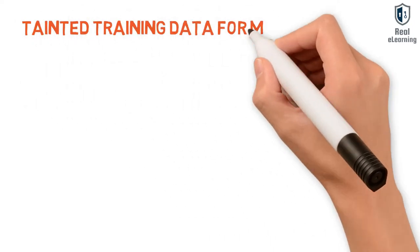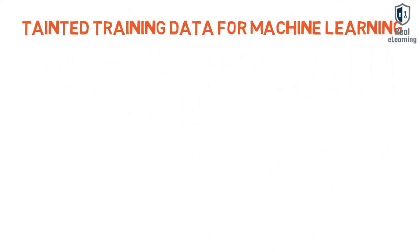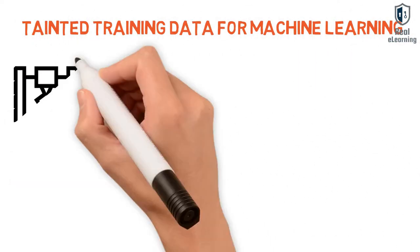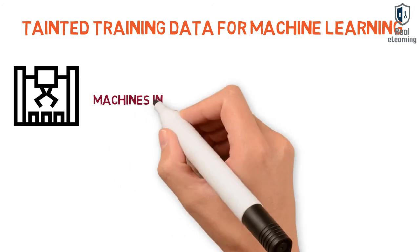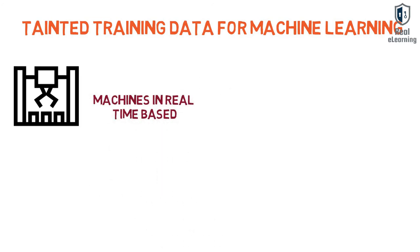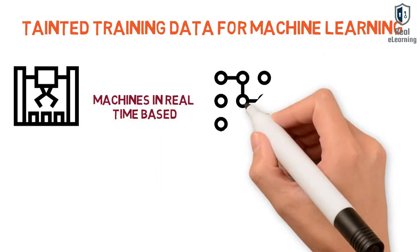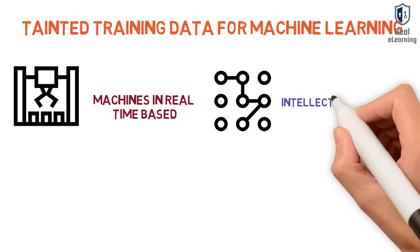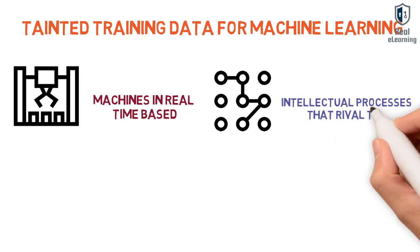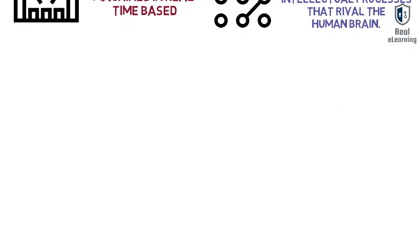Tainted training data for machine learning, ML, is when machines are blocking attacks from other machines in real time based on machine learning, understanding patterns and using intellectual processes that rival the human brain.